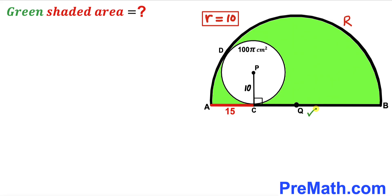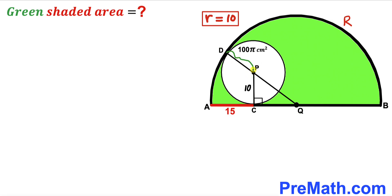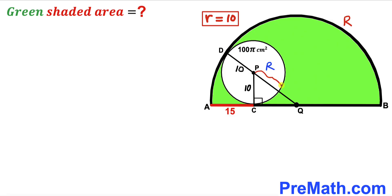Next, we connect center Q with the point of tangency D. By a crucial fact, the centers and points of tangency are collinear, so centers P and Q and point D lie on the same line. We can see that DP is the radius of the white circle, so DP = 10, and DQ is the radius of the semicircle, so DQ = uppercase R. Therefore, segment PQ = R − 10.